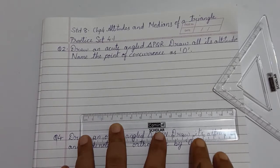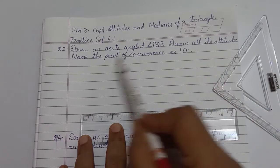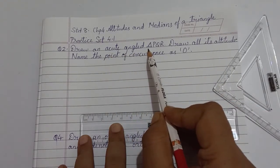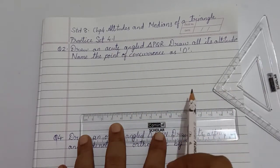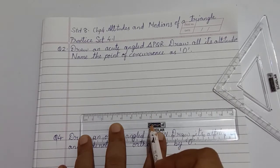Let us find the point of concurrence O of three altitudes in an acute angle triangle using a set square. For that, we need to first draw an acute angle triangle of any measurement.